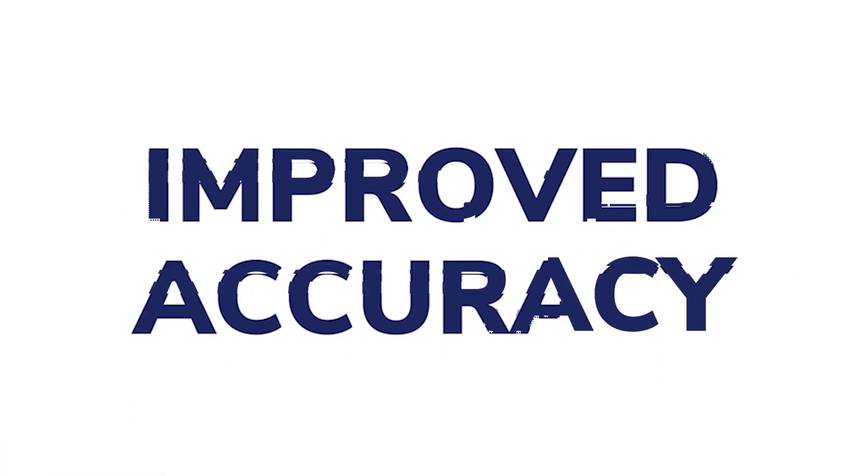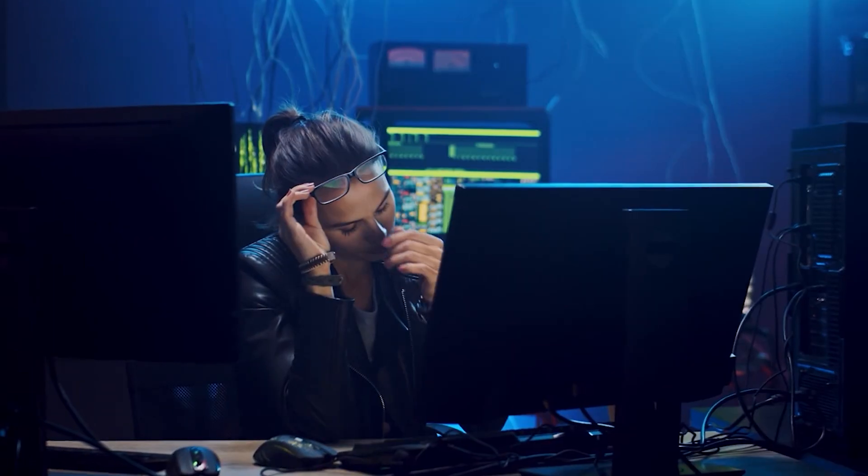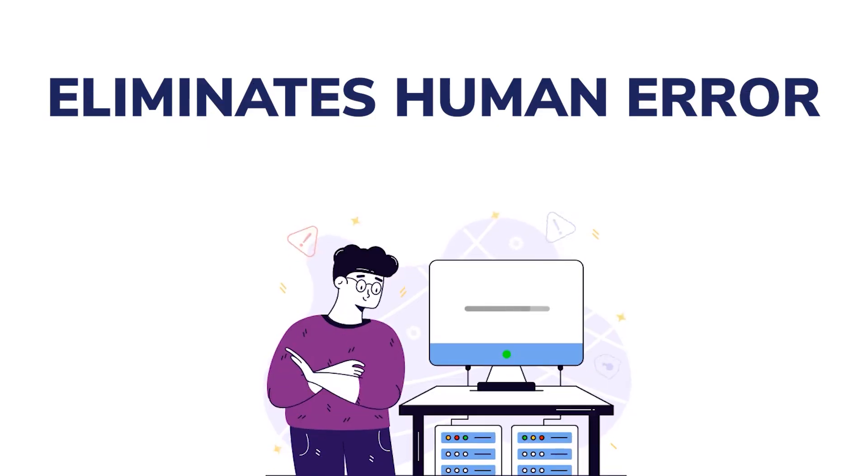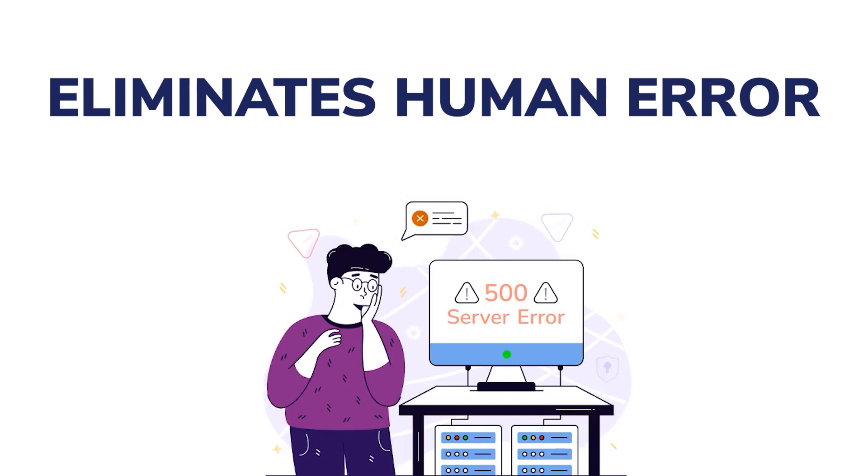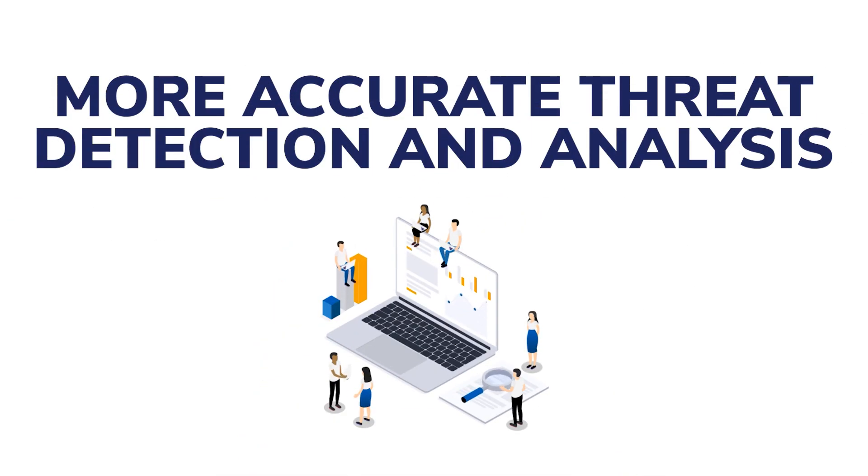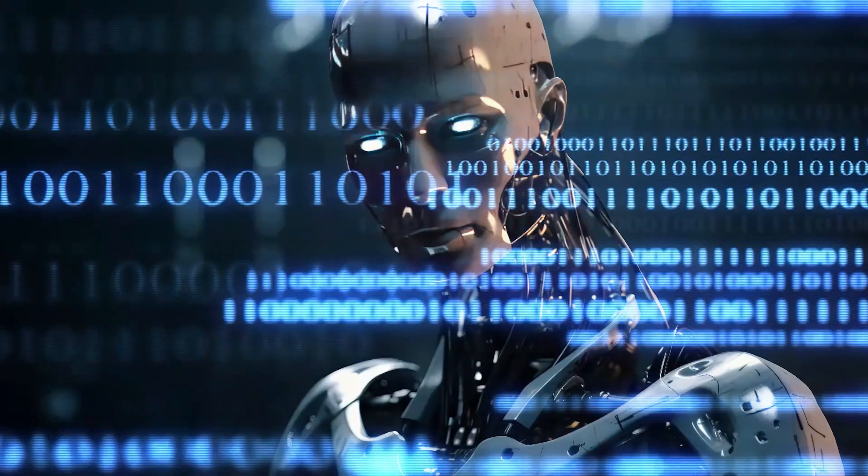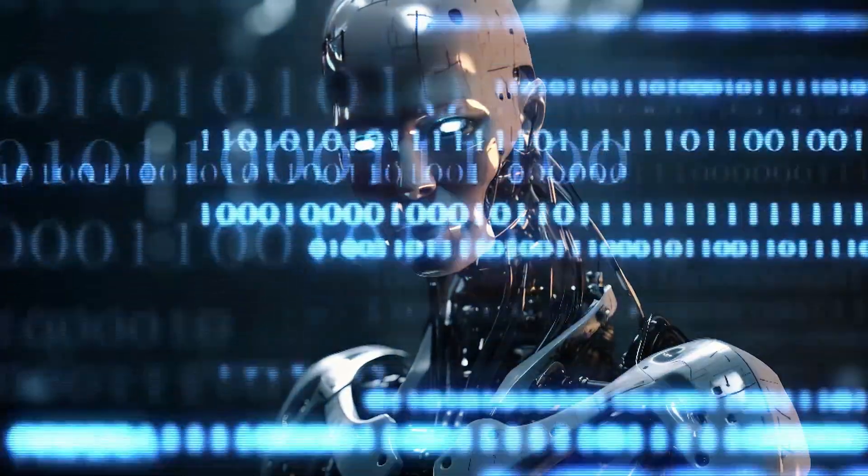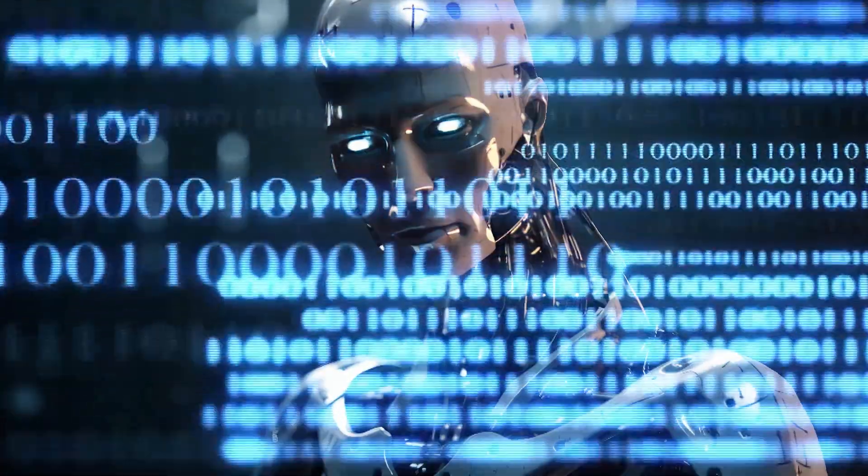This significantly reduces the time it takes to eliminate threats and mitigate any potential damage. Improved accuracy. Humans are prone to errors, especially when managing massive amounts of data. Automated threat hunting eliminates human error and provides more accurate threat detection and analysis. Machine learning algorithms can learn from previous data, adjust to new threats and improve their accuracy over time.